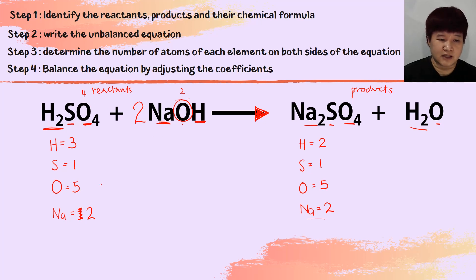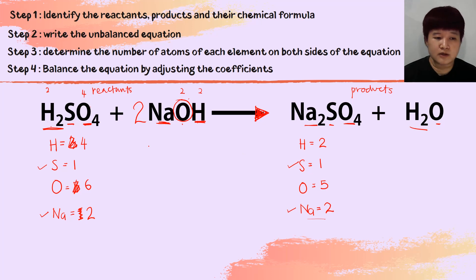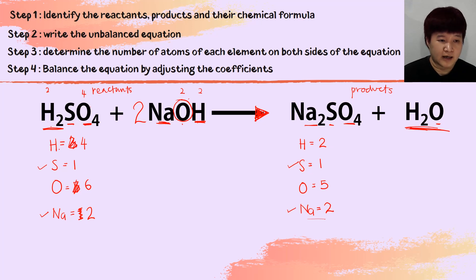After placing a coefficient of 2 on NaOH: oxygen in H₂SO₄ = 4, oxygen in 2×NaOH = 2×1 = 2, so total oxygen on reactant = 6. Hydrogen in H₂SO₄ = 2, hydrogen in 2×NaOH = 2×1 = 2, so total hydrogen on reactant = 4. Comparing reactant and product: hydrogen 4 vs 2 — not balanced; sulfur 1 vs 1 — balanced; oxygen 6 vs 5 — not balanced; sodium 2 vs 2 — balanced.